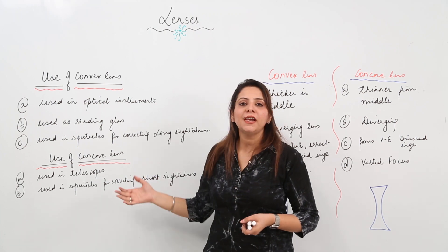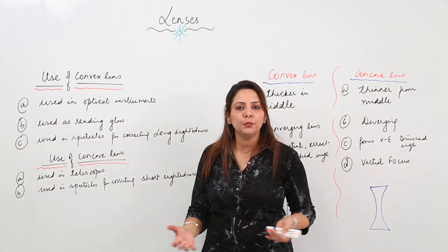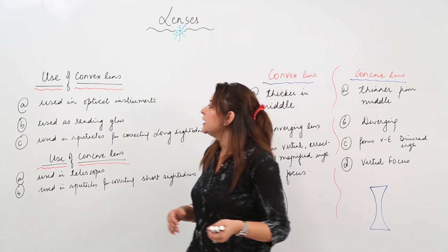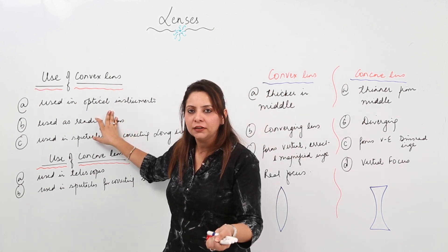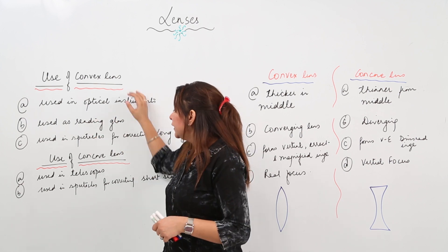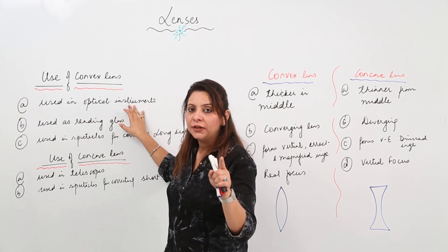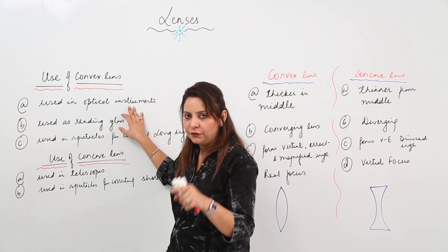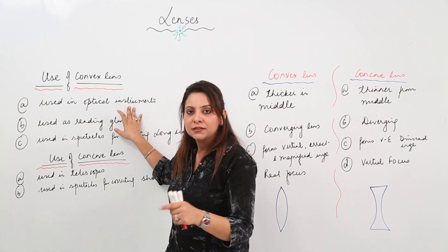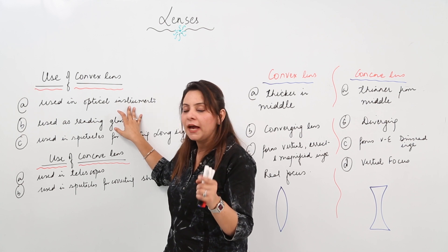Now what are the uses for convex and concave lens? As you are aware of the properties now, convex lenses are used in optical instruments like projectors, cameras - I'm sorry, not telescopes - it is used in optical instruments like cameras, as magnifying glass, in searchlights.